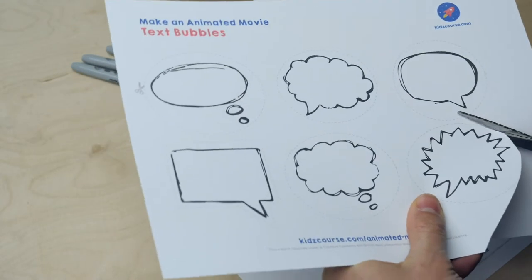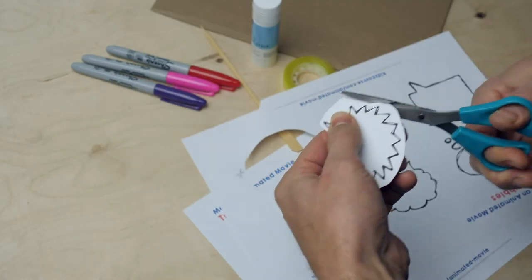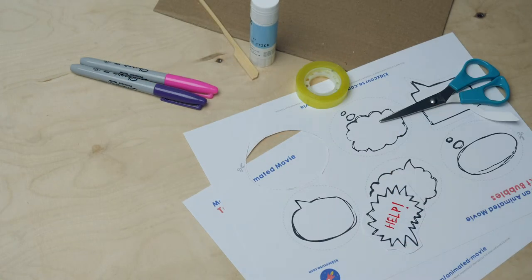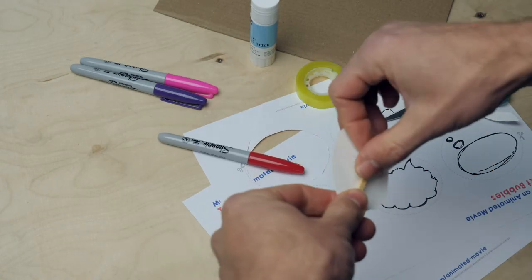Cut out the speech bubbles with plenty of space around them. Glue them to sturdier paper and then cut them out neatly. Write down your text and glue the speech bubble on a toothpick.